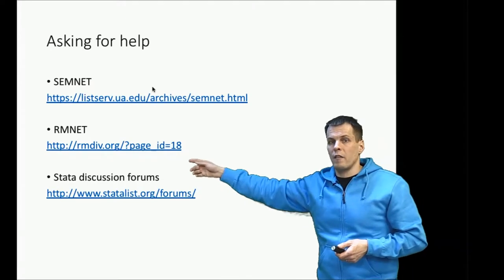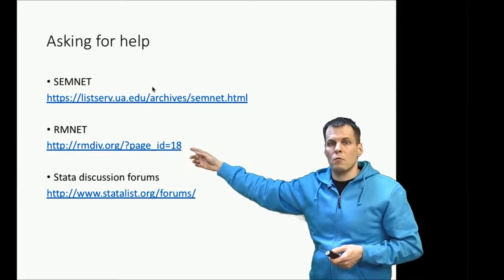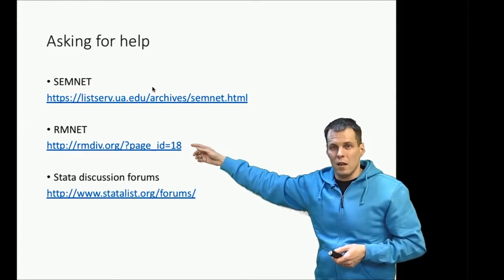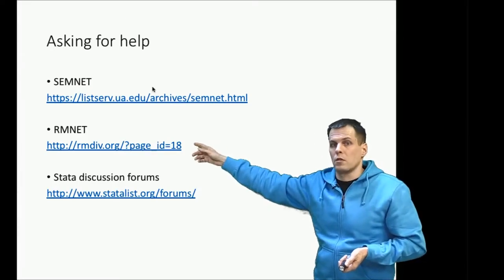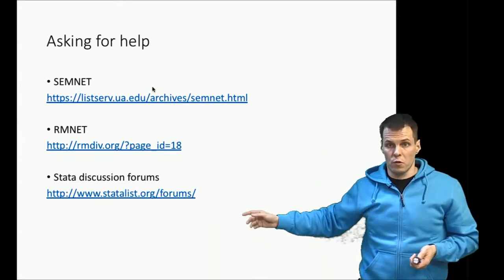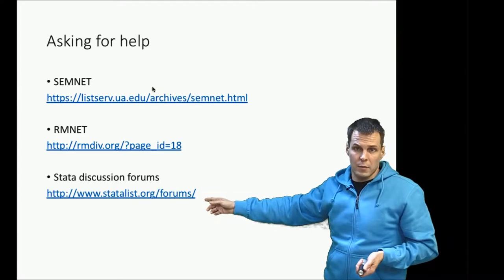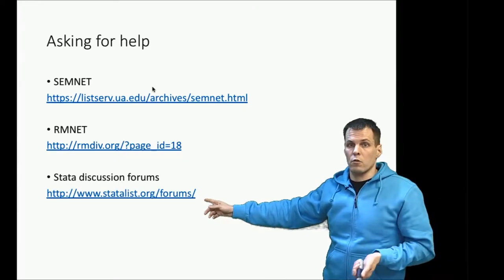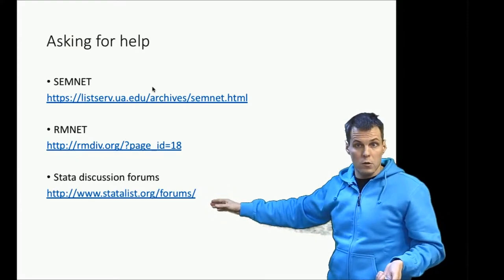The Academy of Management Research Methods division list is a bit smaller — perhaps a few hundred to a thousand people — and questions there tend to be less about specific data analysis problems and more about research design, such as whether you should include a control variable or not. If you're interested in learning a particular software, that software typically has forums. For example, Stata has statalist.org, where people with all levels of expertise ask questions, from getting started to troubleshooting a multi-level model that doesn't converge.